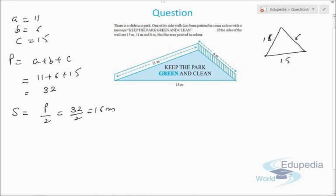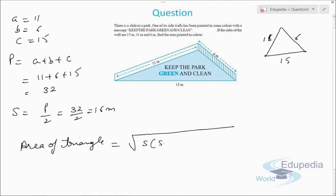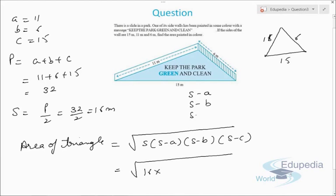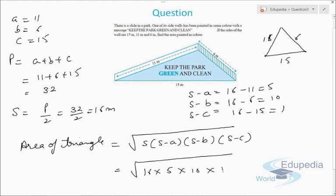The semi-perimeter s = 32 ÷ 2 = 16 meters. Now we find s−a = 16 − 11 = 5; s−b = 16 − 6 = 10; s−c = 16 − 15 = 1. The area of the triangle = √(s × (s−a) × (s−b) × (s−c)) = √(16 × 5 × 10 × 1).